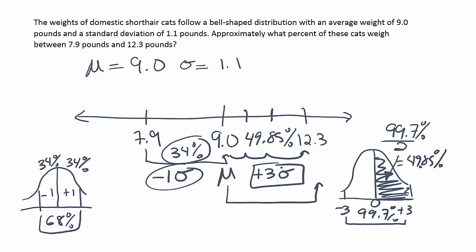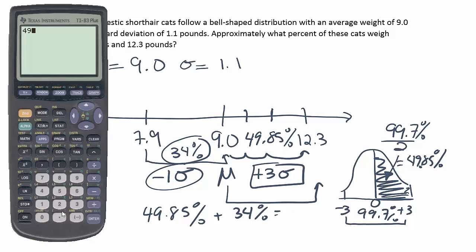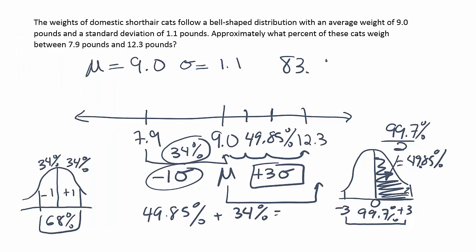Okay, and if you put it together, then you get the final answer. So it's going to be 49.85% plus 34%. Together, that will give you your solution. So it's simply 49.85 plus 34%. And you get 83.85%. And that's it.